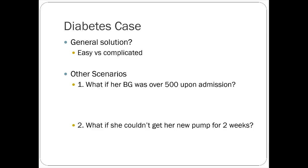If the patient is getting her new pump within a reasonable timeframe, you don't need to get too complicated. Getting her into hypoglycemia would be the biggest concern. However, if her blood sugar was over 500 on admission, that puts her in a potentially ketoacidotic situation — something you'd definitely want to keep on your differential.